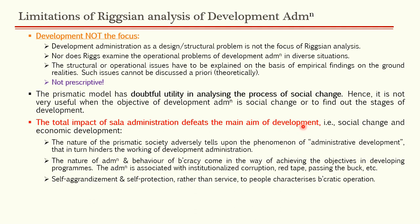The prismatic model has doubtful utility in analyzing the process of social change — as Daya Krishna and Hanban Lee have argued, it is an equilibrium model that does not support change. The total impact of Sala administration defeats the main aim of development. The nature of prismatic society adversely affects administrative development, which in turn hinders development administration.